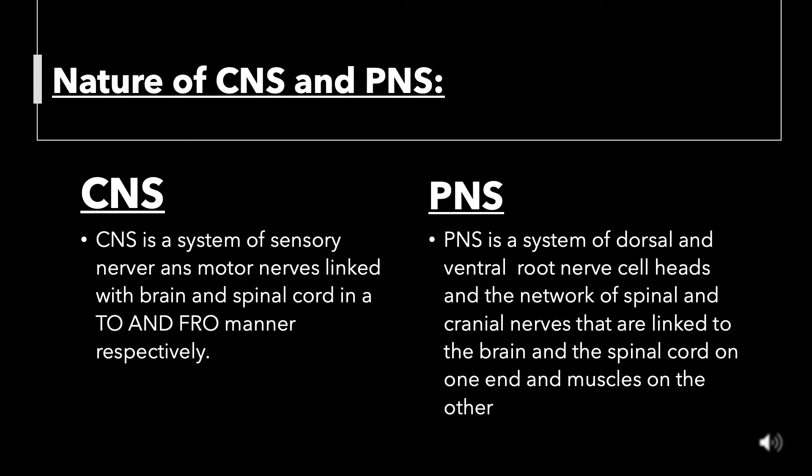Regarding the nature of CNS and PNS: CNS is a system of sensory nerve ends and motor nerves linked with brain and spinal cord in a to-and-fro manner, whereas PNS is a system of dorsal and ventral root nerve cell heads and the network of spinal and cranial nerves that are linked to the brain and the spinal cord on one end and muscles on the other.